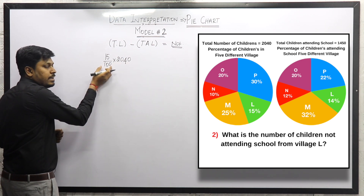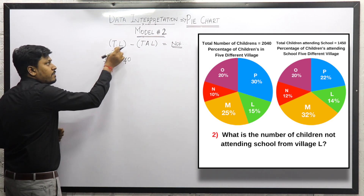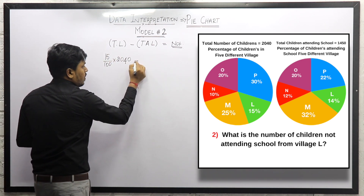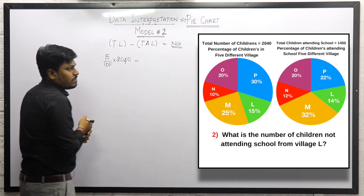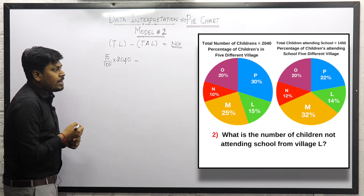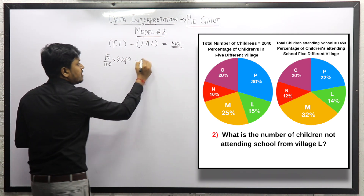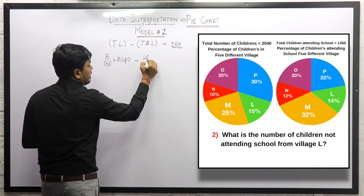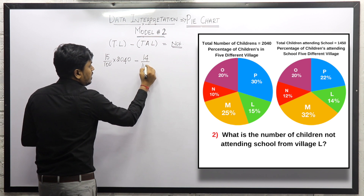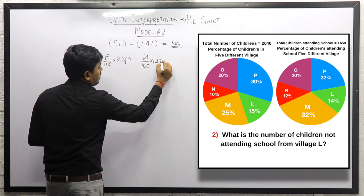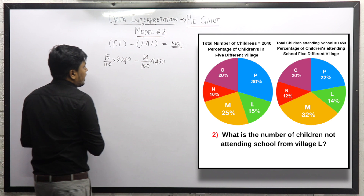15% of children are from village L out of 2040 total students. For children attending school from village L, that is 14% according to chart number 2. So 14% of children are attending school from village L out of 1450.